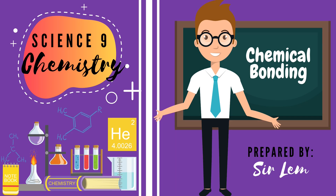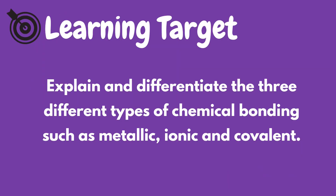Hello students! Welcome back to our science video. For today, we will cover the topic about chemical bonding. At the end of this lesson, learners are expected to explain and differentiate the three different types of chemical bonding such as metallic, ionic, and covalent.